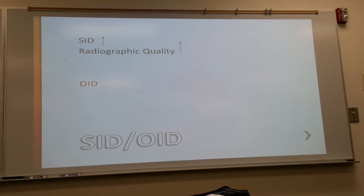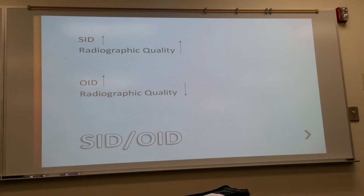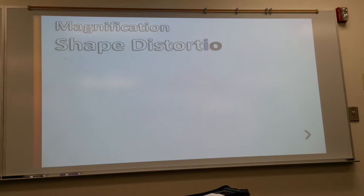What happens though, once you start changing your distance, if all the technical factors that you have are at a 40 inch SID and you want to use 44, then you're going to have to adjust your technical factors to compensate for that. And then, of course, as the OID increases, what happens to radiographic quality? Decreases.